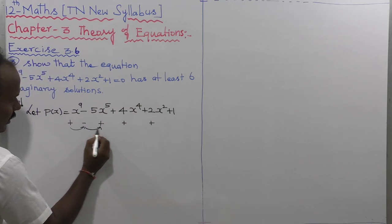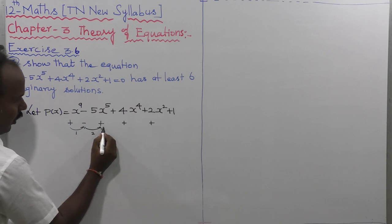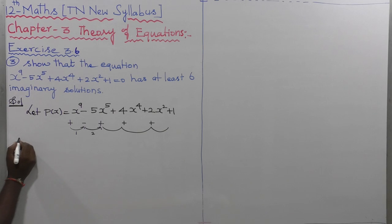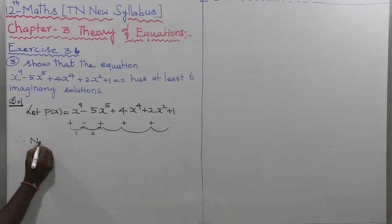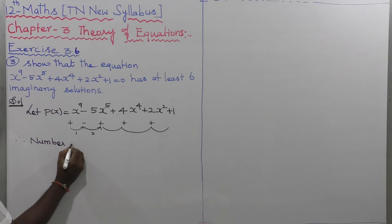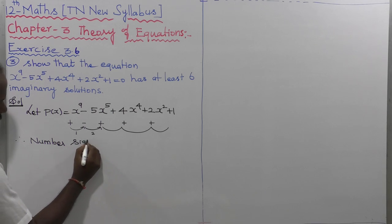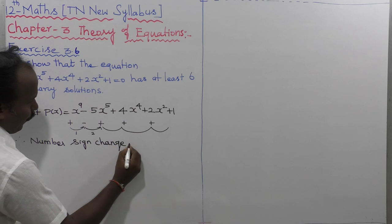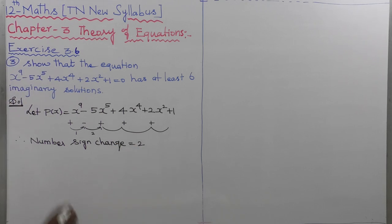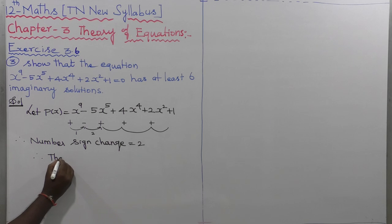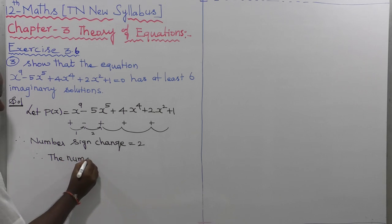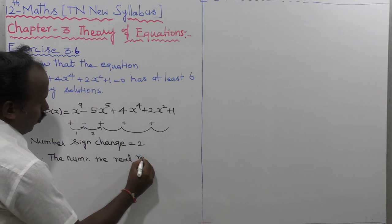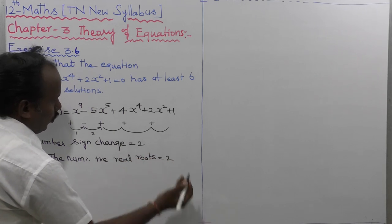The sign changes: from the first to second term (one change), then second to third (two changes), and the remaining signs stay the same. Therefore the number of sign changes is equal to 2, and therefore the number of positive real roots is equal to 2.